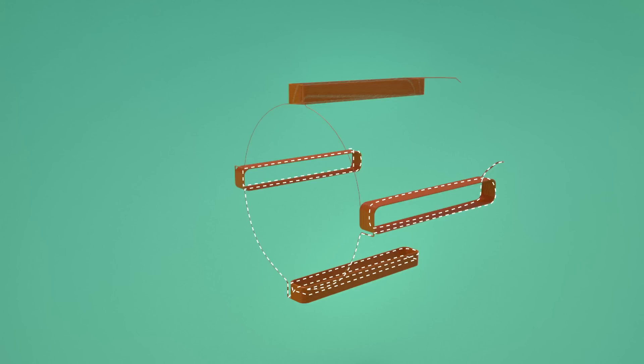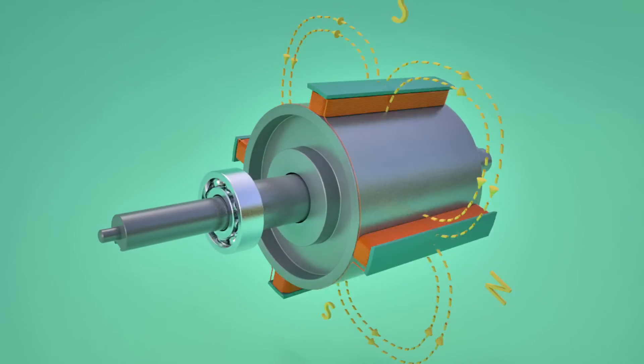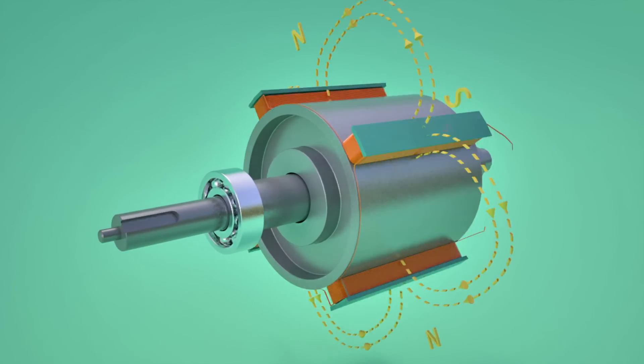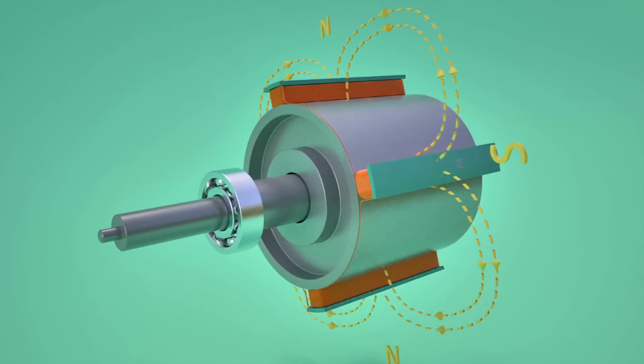Rotor coils are excited with a DC power source. The rotor is made to rotate by a prime mover. This makes the rotor flux also rotate along with it, at the same speed.